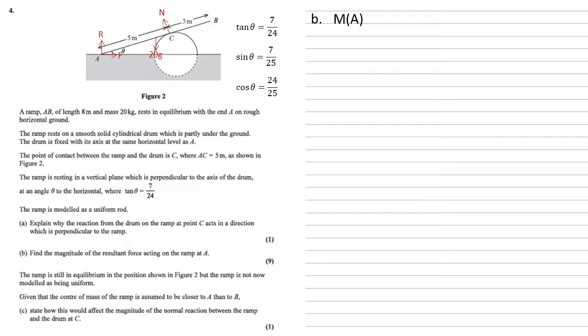Moments around A going anti-clockwise: we've just got N, which is 5 meters away and perpendicular to the ramp. Going clockwise, we've got 20G which is 4 meters away. This one isn't perpendicular, so to match it up we use cos theta. We get 5N equals 4 times 20G cos theta.